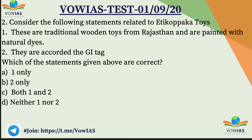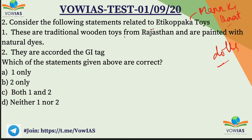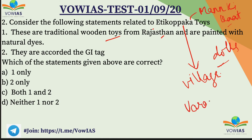Question number 2: Consider the following statements related to Etikoppaka toys. If you have heard of the Prime Minister's program, he mentioned Etikoppaka toys. These are dolls — wooden dolls. Statement 1: These are traditional wooden toys from Rajasthan and are painted with natural dyes. Statement 2: They are accorded the GI tag.